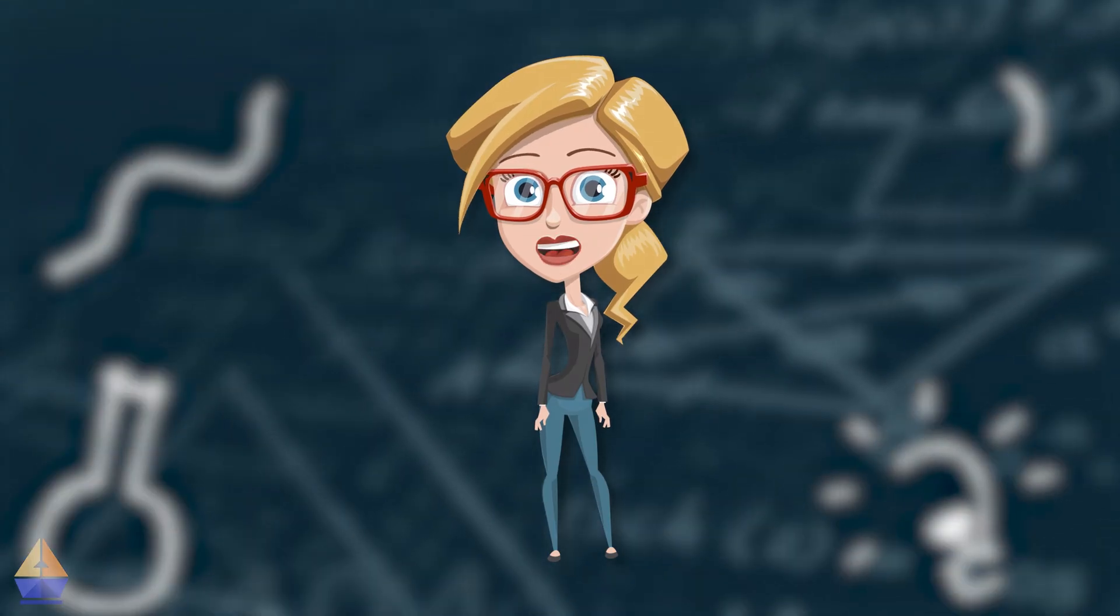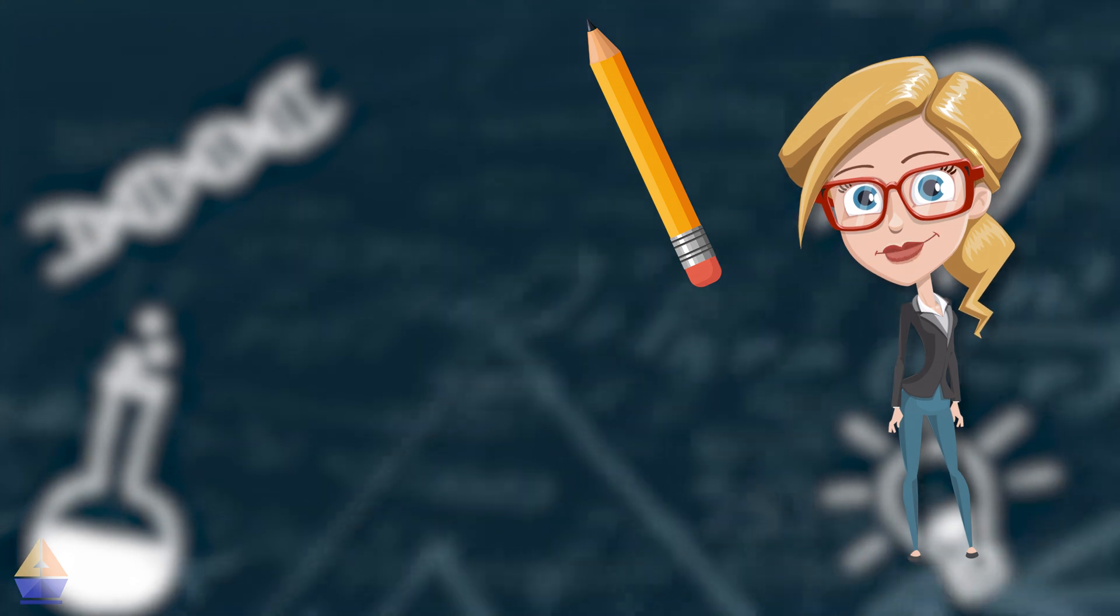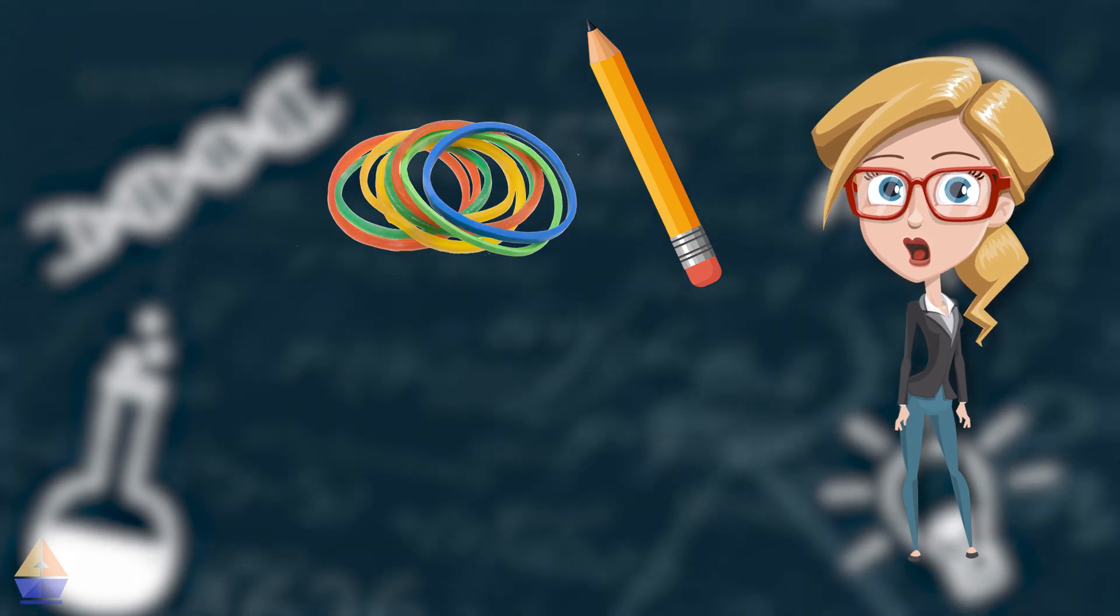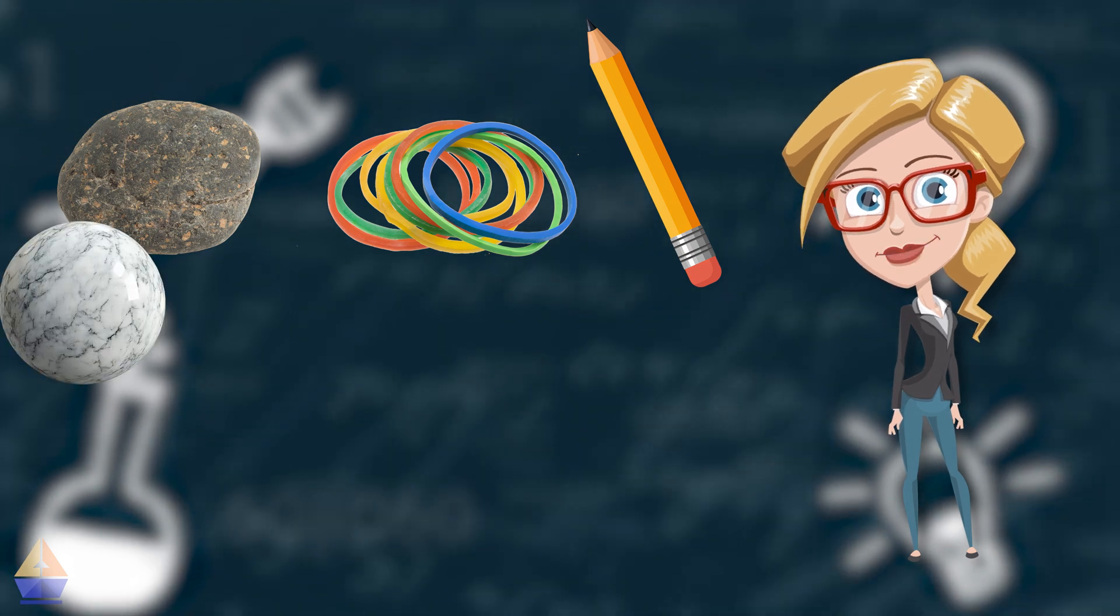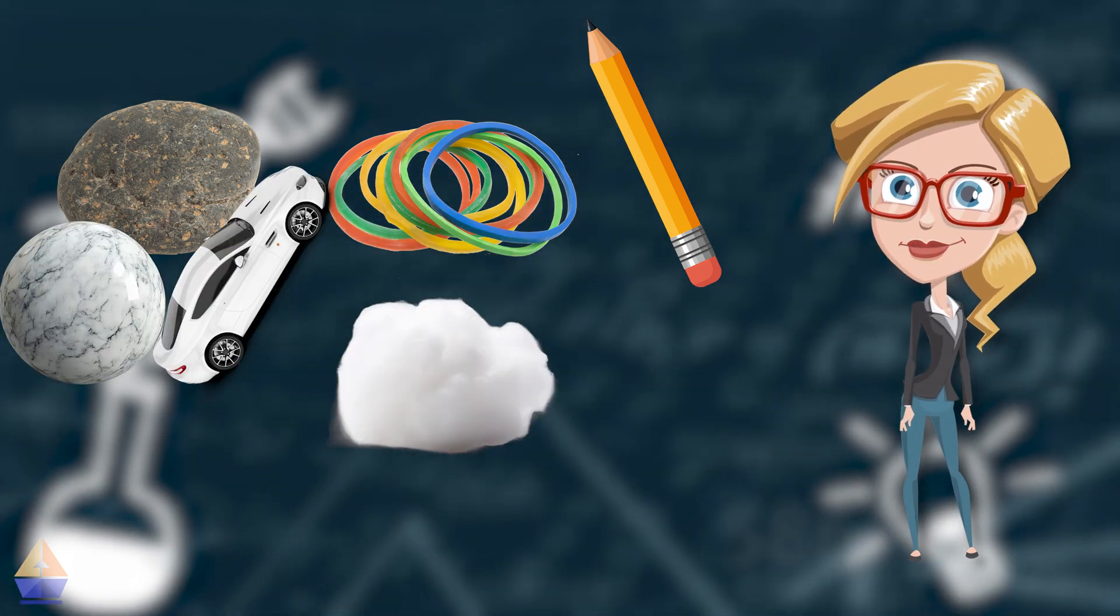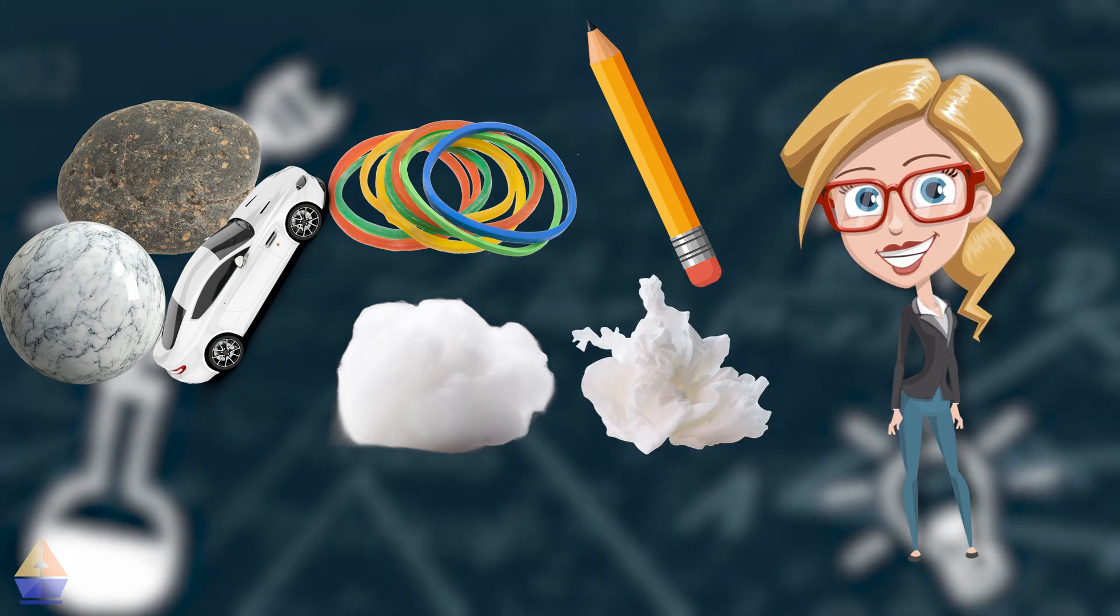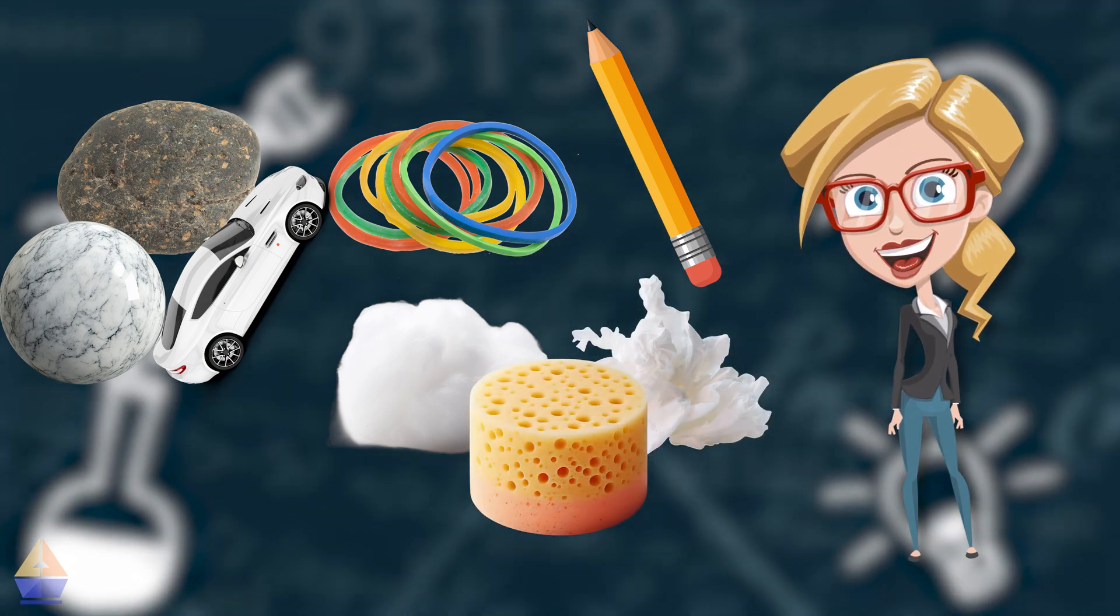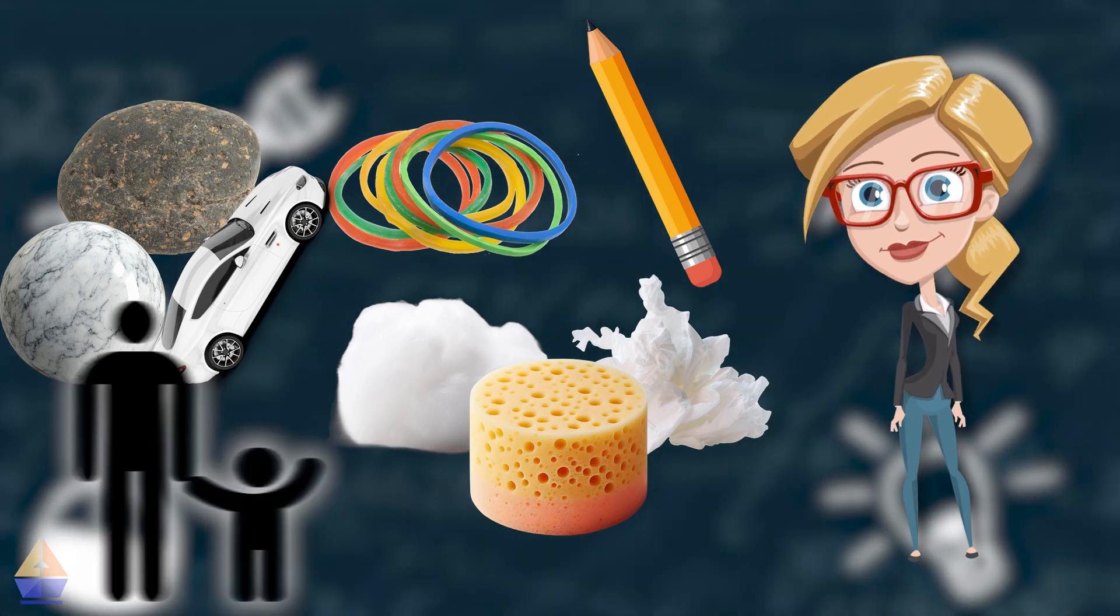For our experiment, you'll need 1. A pencil. 2. A rubber band. 3. A small rock. Or if you don't have a rock, you can use a marble or a small toy car. 4. A cotton ball. Or if you don't have a cotton ball, you can use a small piece of paper towel, a small piece of sponge, or even a soft sock. And 5. A grown-up to help you.